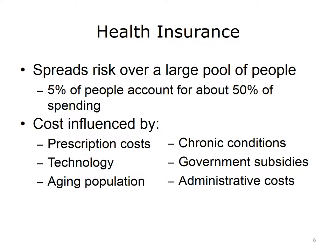Health insurance spreads the financial risk for healthcare expenditures for a group of people by pooling money or premiums paid on their behalf into a larger fund. A payer uses the pool of money to pay or reimburse for healthcare services provided to the individual members of the group. In a given year, approximately 5% of the people enrolled in a health insurance plan consume about half of all the money available in the pool. Health plans stay solvent in most cases because each year all of its members contribute more money than they use. The cost of health insurance is influenced most by prescription costs, technology, an aging population, the prevalence of chronic conditions, government subsidies, and health plan administrative costs.